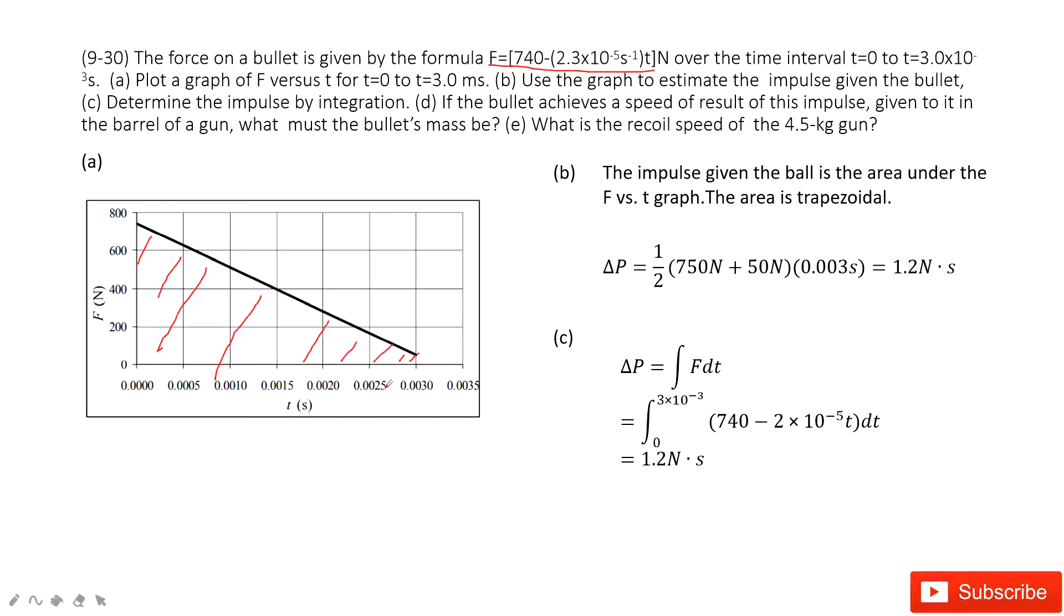Super easy, right? One half, this side, plus this side, and times this side. So this area is the trapezoid. This one, then you can estimate the impulse.